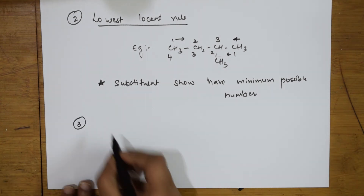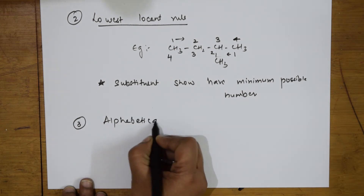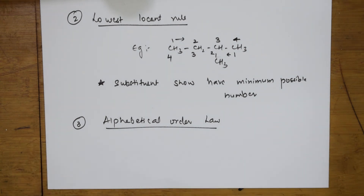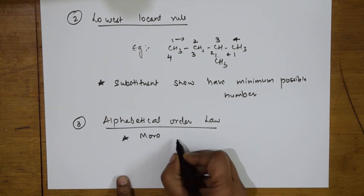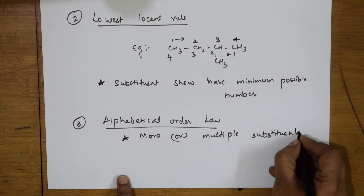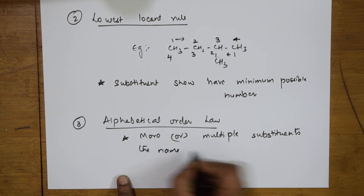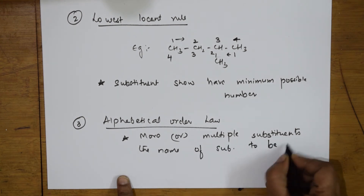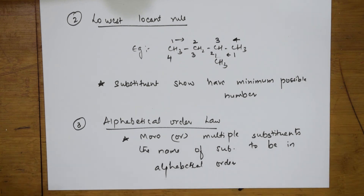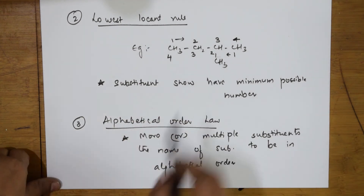Next rule you need to follow is alphabetical order rule. If you have multiple substituents — like chloro, bromo, iodo, methyl, and so on — then you are going to follow alphabetical order. The rule is: if you have multiple substituents, the names of the substituents are to be written in alphabetical order. So: rule 1 — longest chain rule; rule 2 — lowest locant rule; rule 3 — alphabetical order.